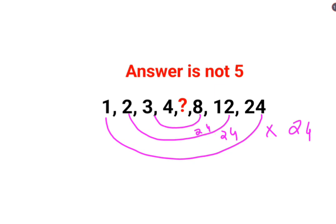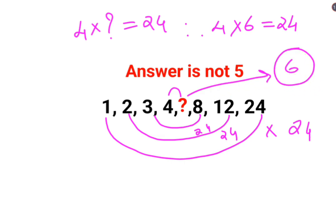So then, 4 multiplied by what gets you 24, right? Since 4 multiplied by 6 gets you 24, the answer for this question mark is supposed to be 6.